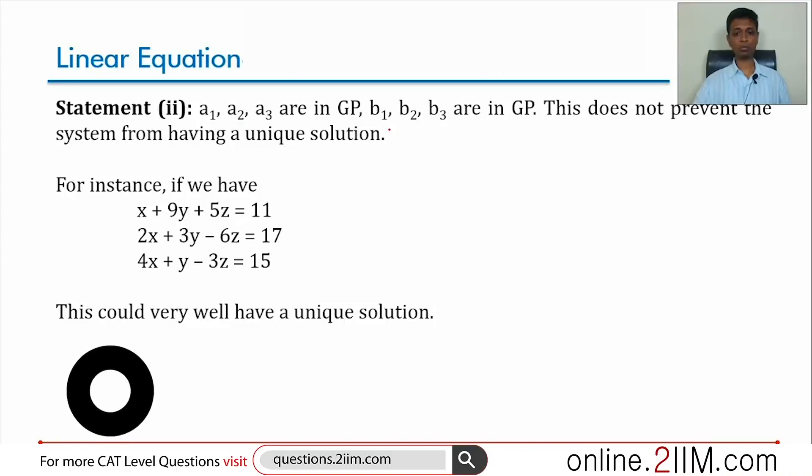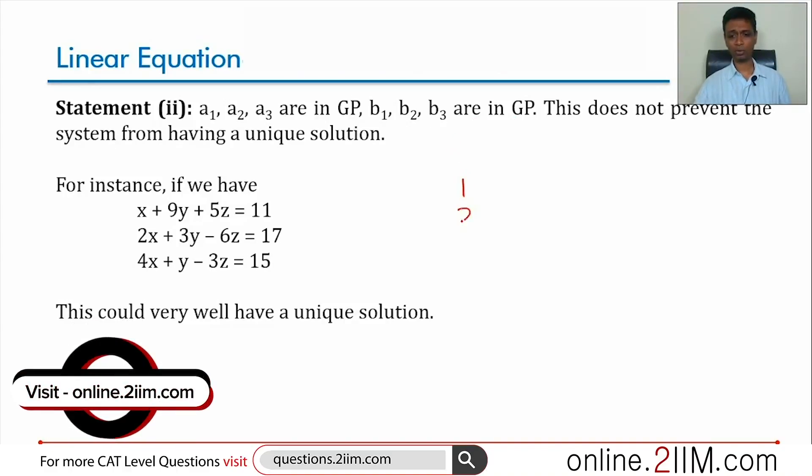a1, a2, a3 are in GP. b1, b2, b3 are in GP. Think about this. a1, a2, a3 could be 1, 2, 4. b1, b2, b3 could be 1, 3, 9.